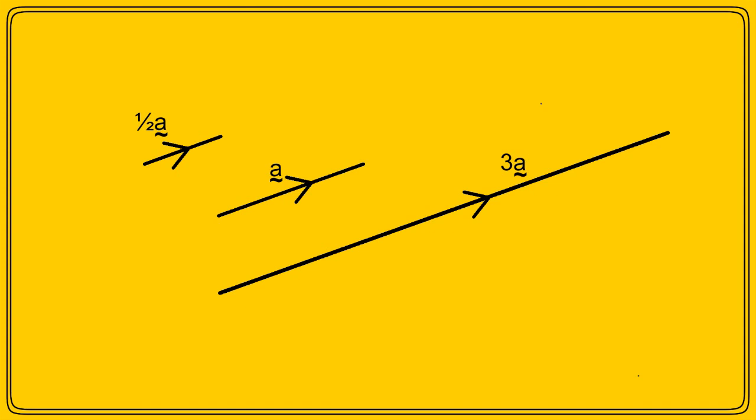Suppose my new vector is only half as long as my first vector. Just draw a line, half as long as the first vector, pointing in the same direction, of course, and label it as half a.